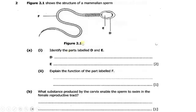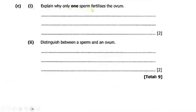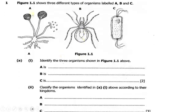Figure 2.1 shows the structure of a mammalian sperm. Part A, number 1: identify the parts labeled D and E. Part A, number 2: explain the function of the part labeled F. Part B: what substance produced by the cervix enables the sperm to swim in the female reproductive tract? Part C: explain why only one sperm fertilizes the ovum. Part D: distinguish between a sperm and an ovum.